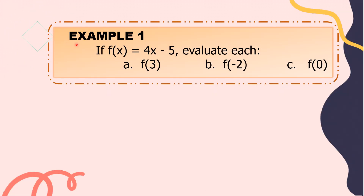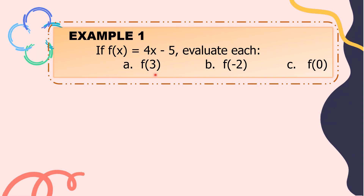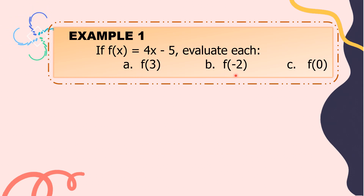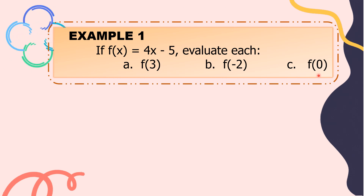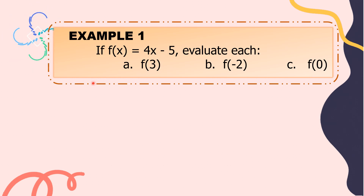Let's have example number 1. If f of x equals 4x minus 5, evaluate each. For letter A, we have f of 3, meaning the value of x is 3. Letter B, f of negative 2 — the value of x is negative 2. Letter C, f of 0 — the value of x is 0. To evaluate the function, we just substitute or replace the given values of x into the function.